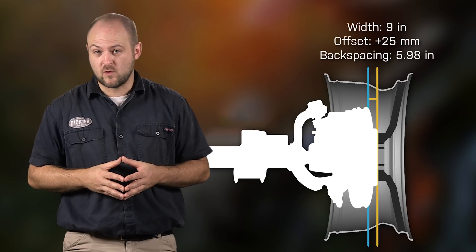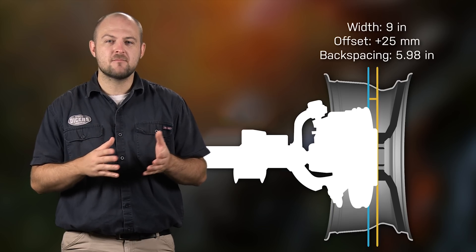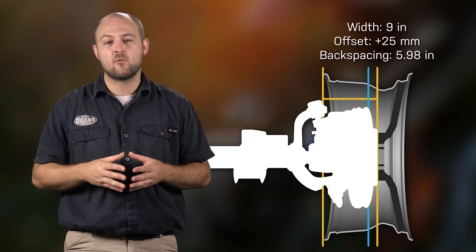Next we have another 9 inch wheel, but this one has an offset of positive 25. We can see that with this wheel the mounting surface is pushed outward, therefore the backspacing is increased to 5.98 inches. So more of the wheel sits over the axle.